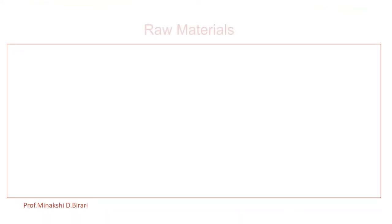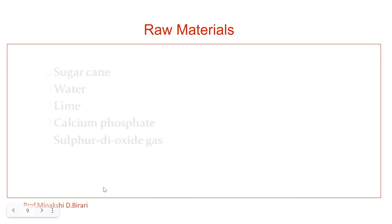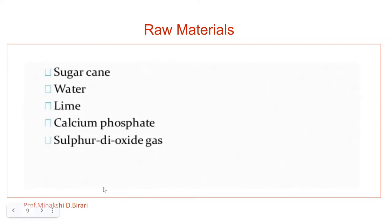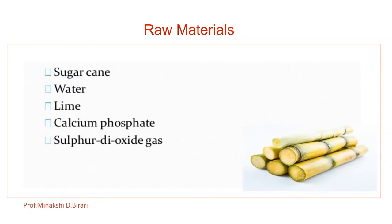First of all, what are the raw materials required for the manufacturing of cane sugar from sugarcane? These are: sugarcane, water, lime, calcium phosphate, and sulfur dioxide gas. These are the important raw materials required for the manufacturing.